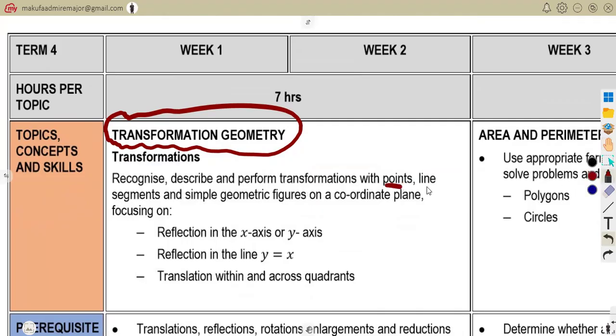You can transform points, line segments and simple geometric figures on a coordinate plane, focusing on the reflection in the x or y-axis, the reflection in the line y equals x, the translation within and across quadrants. You need to refer to that. But do not worry about these terms if you do not understand them guys. Just know that we are going to be talking about transformation geometry.